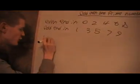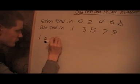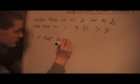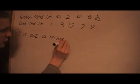So prime numbers can only be divided by one and itself. And I also want to let you know that one is not a prime number.